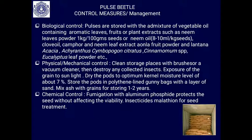For physical or mechanical control, clean storage places with brushes or a vacuum cleaner to destroy insects, eggs, and larvae. Expose grains to sunlight to dry them — an optimum kernel moisture level of about seven percent allows longer storage. Pulses can also be stored in polythene-lined gunny bags with a layer of sand, or using paddy husks, ashes, or sand to control infestation and allow storage for one to two years.